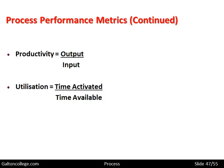Utilization is the time activated divided by the available time. Let's say the company works 8 hours a day — the machine is available 8 hours a day. If it's used 1 hour a day, then it's used 12.5% of the time. That's a measure of the utilization of the machine. It could be the machine is just standing there idle.